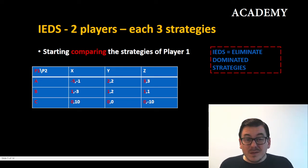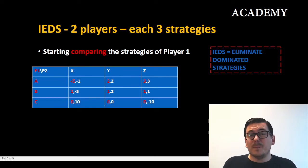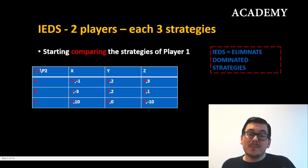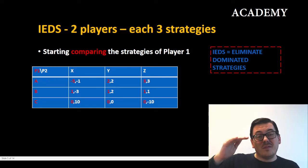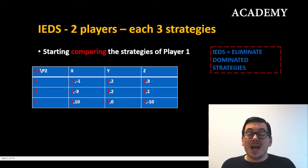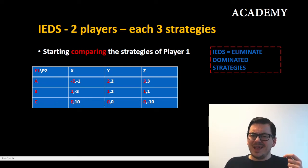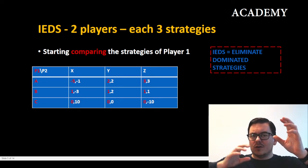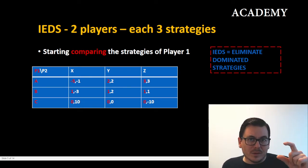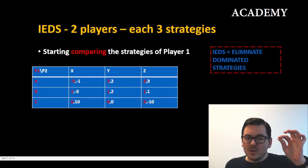Now we will compare the strategies. Let's first try A versus B. If player two chooses X, player one gets minus five with strategy A and one with strategy B, so A is inferior to B here. If player two chooses Y, strategy A gives two and strategy B gives one, so A is better than B. Because we see this contradiction, we can already state that neither A nor B is inferior to the other no matter what player two does.